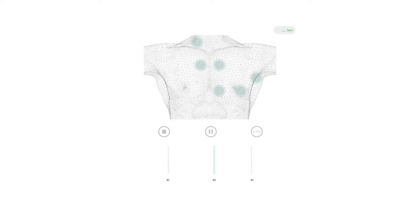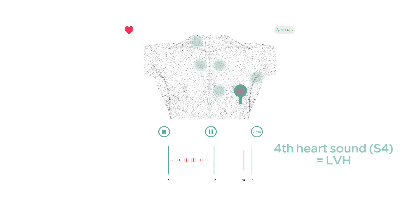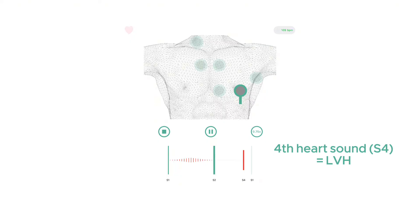Next, in this patient it's interesting that we can hear a fourth heart sound in the apical area. This sound occurs just before S1 and is due to atrial contraction against a stiff and hypertrophied LV, although a fourth heart sound does not specifically suggest severe aortic stenosis — for example, the LV hypertrophy may be due to hypertension.